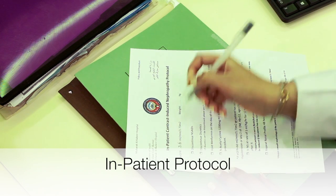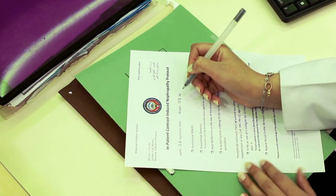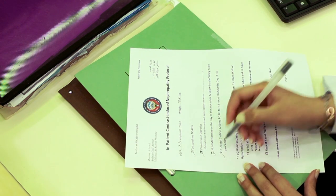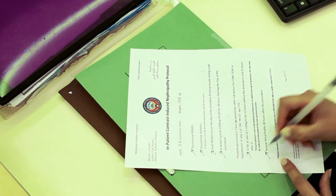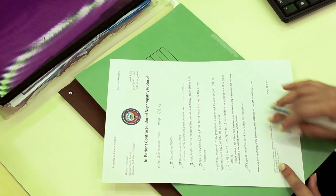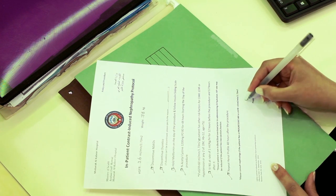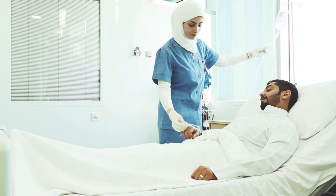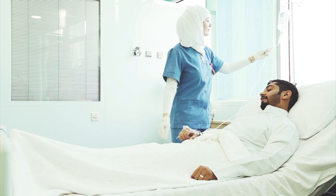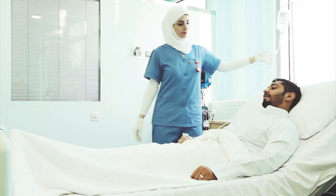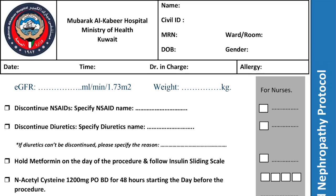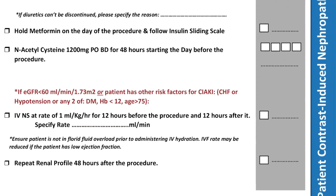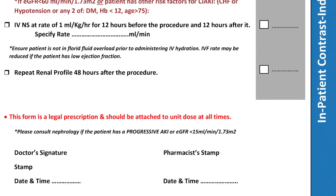To prepare an inpatient for a contrast procedure, the doctor has to fill the inpatient protocol sheet by checking the relevant boxes and signing at the bottom. The nurse will then carry out the orders in the sheet. The protocol sheet is considered as a prescription and should be attached to the unit dose at all times.